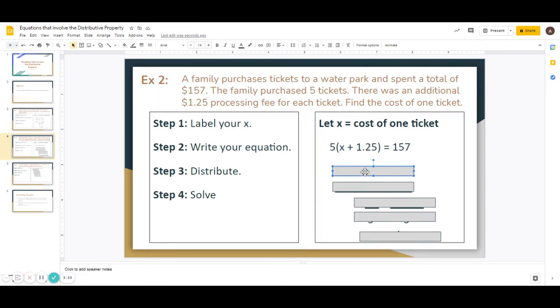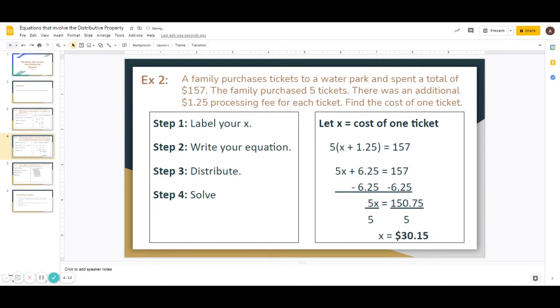So now here we're going to distribute. 5 times x is 5x. 5 times $1.25 is 6.25. Then you're going to subtract 6.25 on both sides to get 5x is equal to 150.75. Then you're going to divide both sides by 5, and you get x is equal to $30.15. So each ticket costs $30.15. Then they have the additional $1.25 processing fee, and then they pay the total of $157.